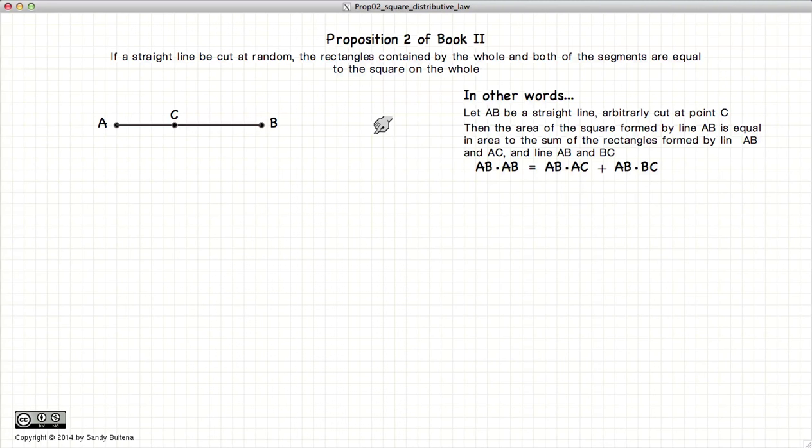This video presentation is on Proposition 2 of Book 2, which states that if we have a line segment AB and a square of AB, then this area is equal to the length of AB times the length of AC plus the length of AB times the length of CB.